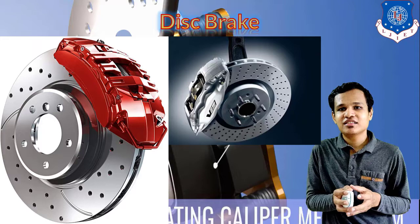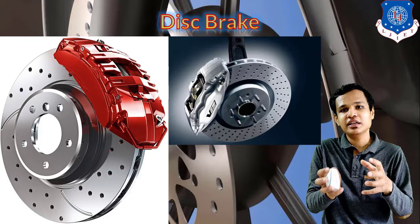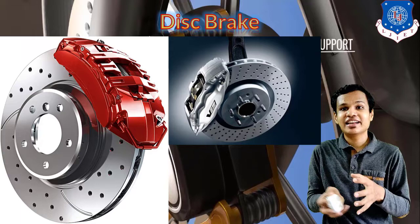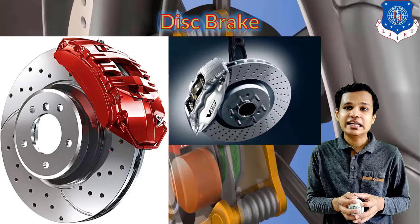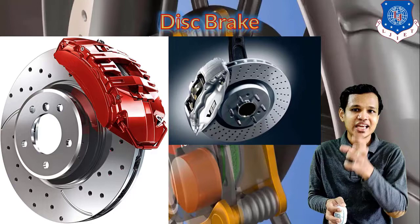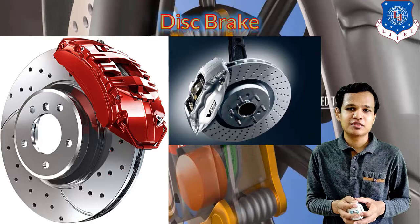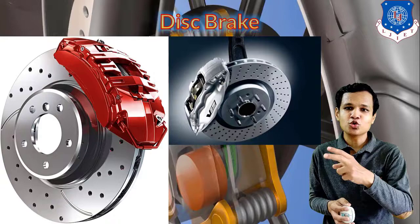In the disc brake, the caliper is in open condition, so whenever heat is generated it can be easily released. In contrast, the drum brake works in an internal enclosed environment of the brake drum, so heat cannot be easily released into the atmosphere. For this reason also, the disc brake is better than the drum brake.